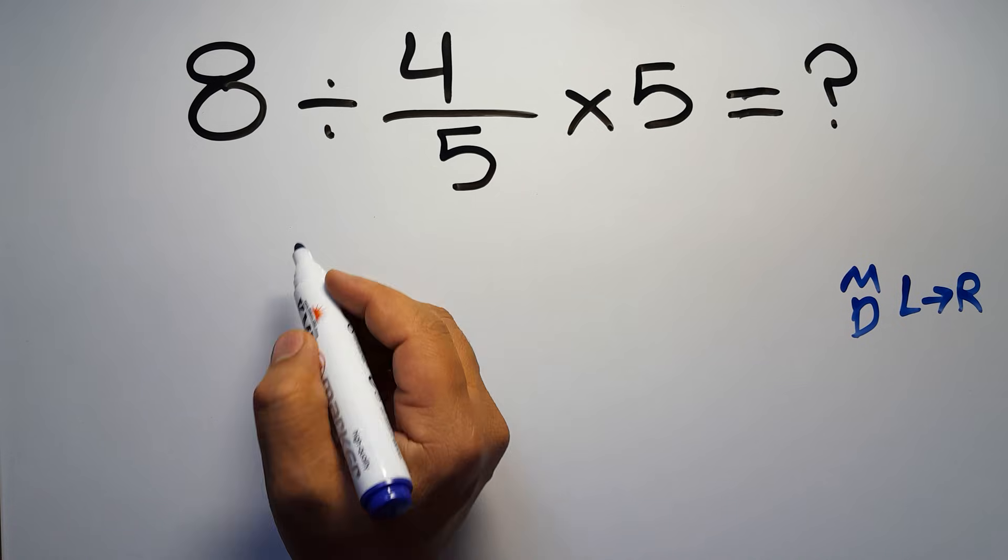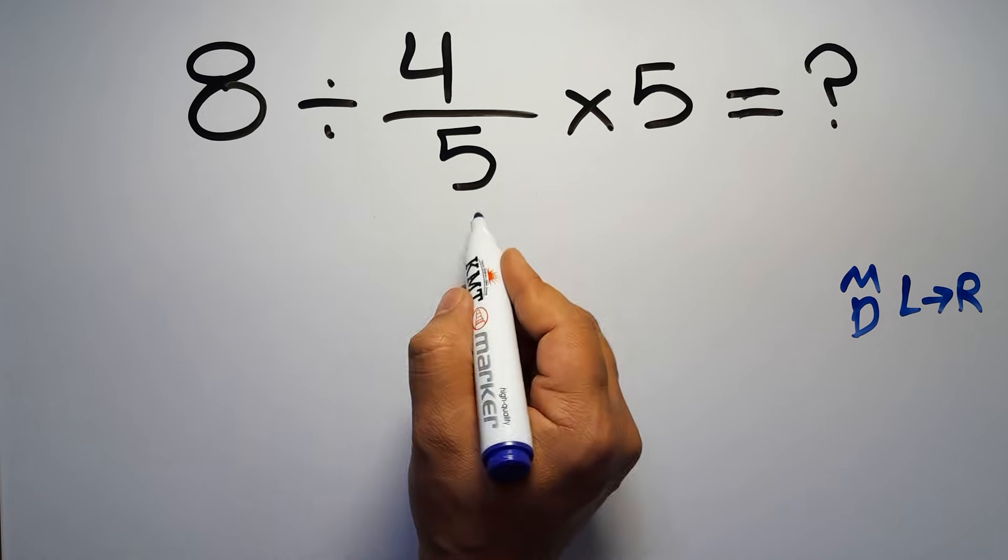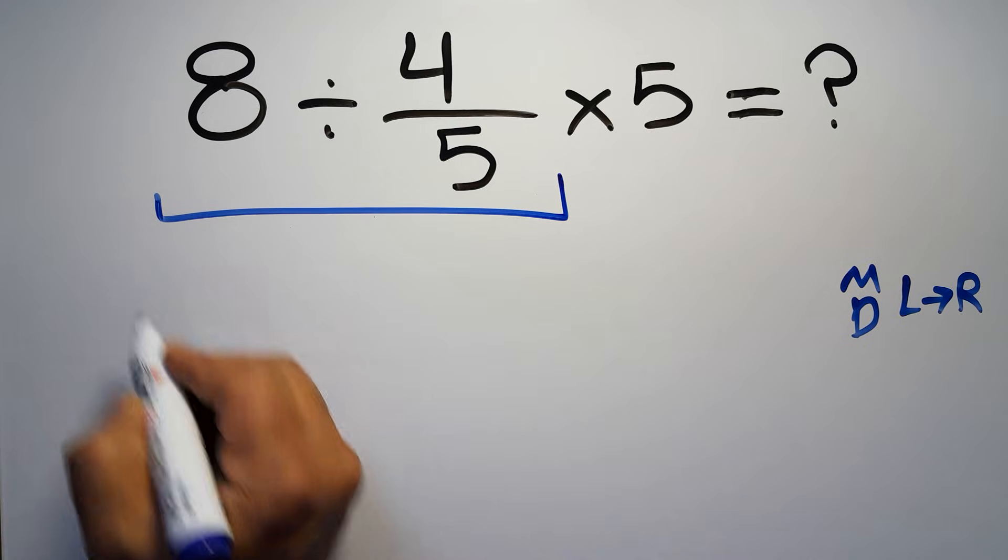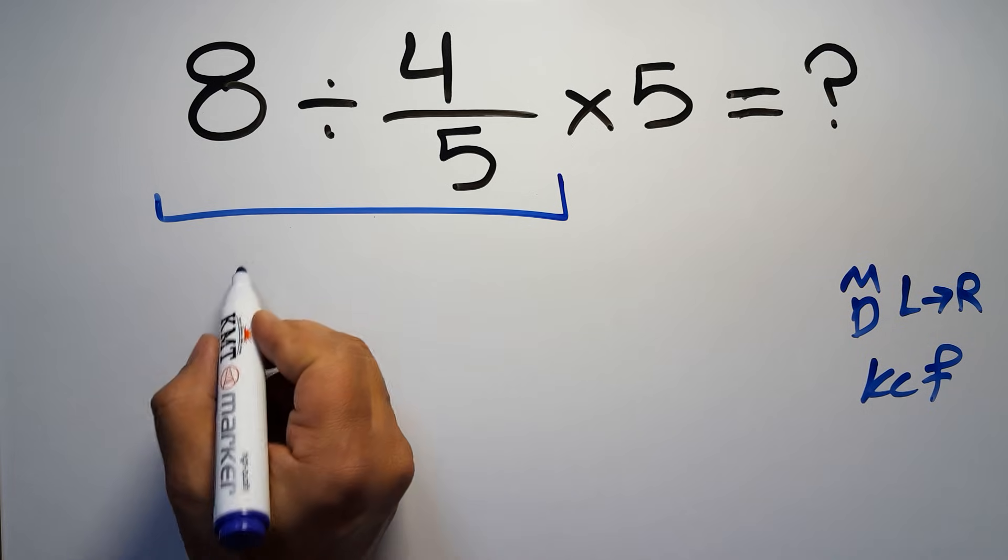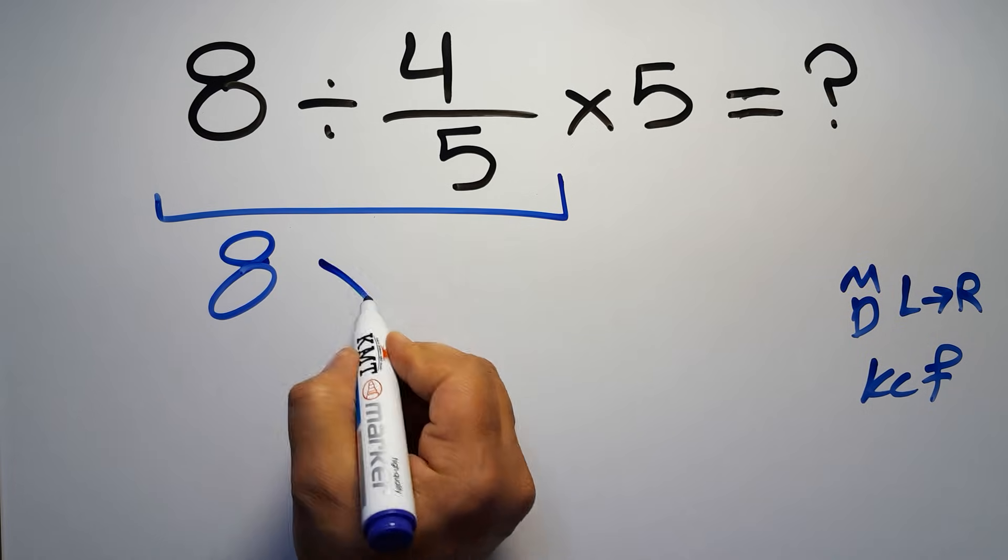So first this division: 8 divided by 4 over 5. According to the KCF rule—K stands for keep, C stands for change, and F stands for flip—we can write: keep the first fraction, change division to multiplication, and flip the second fraction.